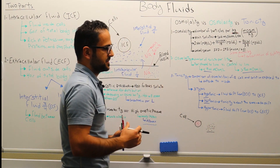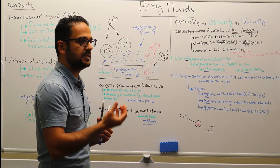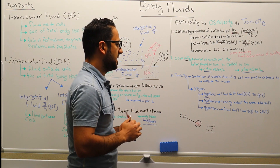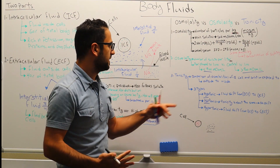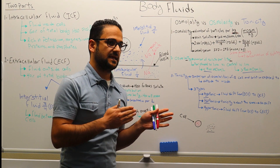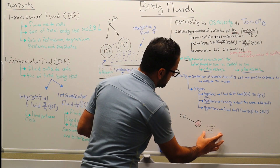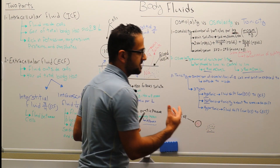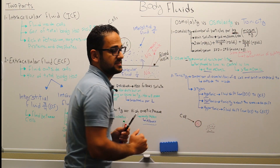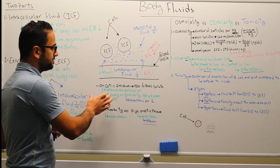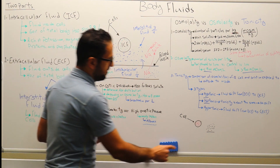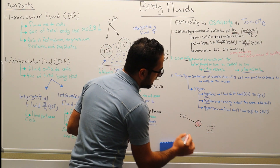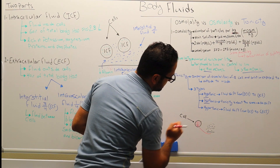Tonicity has three types. The first is hypotonic — low tonicity. Importantly, when thinking about tonicity, we always compare the outside environment to the inside of the cell. In hypotonic conditions, the tonicity — or amount of solutes — outside the cell is less than inside. Therefore, water moves from the outside to the inside of the cell, since there is a higher concentration of solutes inside.